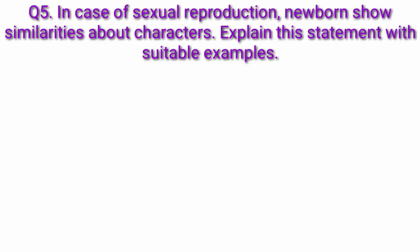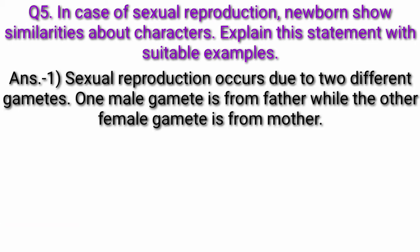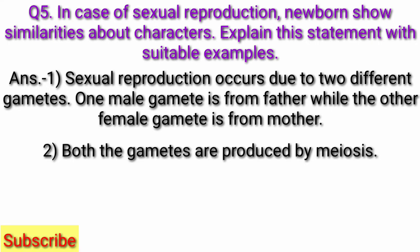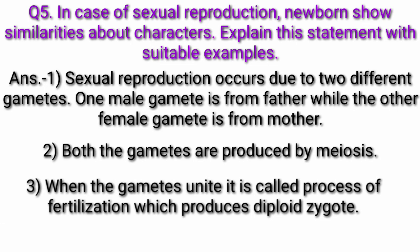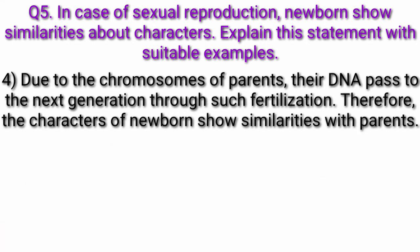Question 5: In the case of sexual reproduction, newborns show similarities in characters with parents. Explain this statement with suitable examples. Answer: Sexual reproduction occurs due to two different gametes — one male gamete from the father and one female gamete from the mother. Both gametes are produced by meiosis. When the gametes unite, it is called fertilization, which produces a diploid zygote. Due to the chromosomes of the parents, their DNA passes to the next generation through fertilization. Therefore, the characters of newborns show similarities with parents.